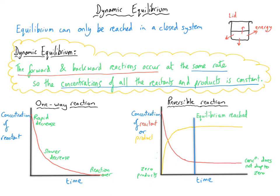It's a dynamic equilibrium because the forwards and backwards reactions are both happening, but the concentrations of reactants and products have no overall change — because product is being made at the same rate that reactant is being used. And because the reaction is reversible, that product is being used up at the same rate it's made, and reactants are forming again. So overall, whilst both are being made and used, there is no overall change.